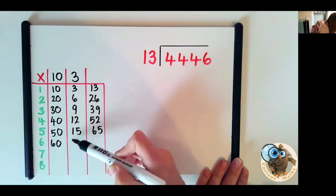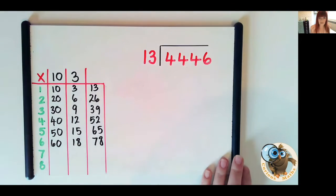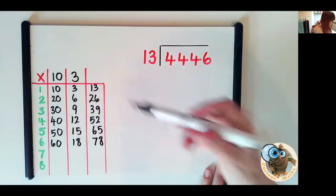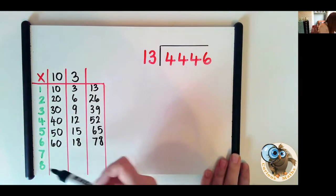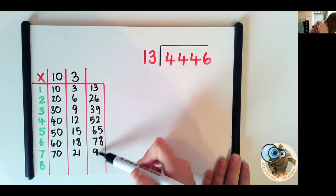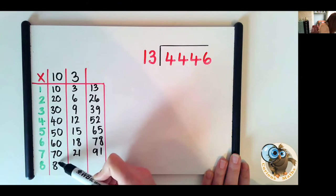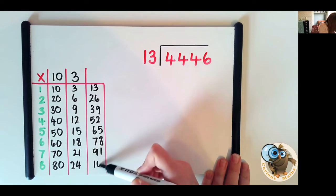6 times 60. So your child does all this before they even start dividing. It gives them their answers and it makes it a lot more simple actually when we're doing it. 7 times 70, 7 3s are 21 that makes 91. I'll go one more. 8 times 80, 8 3s are 24. That gives me 104.